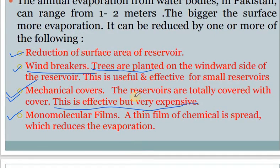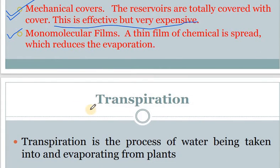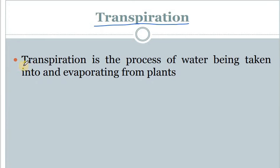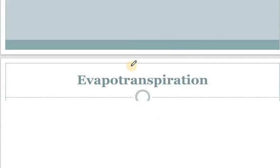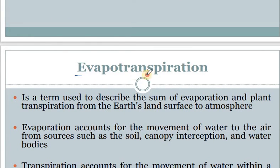After evaporation, we will see the next part of this topic — transpiration. Transpiration is basically the process of water being taken into a plant and evaporating from the plant. When precipitation comes to the ground, some part is absorbed by the plant, and after its consumption by the plant, some water gets evaporated from its leaves — that process is called transpiration.